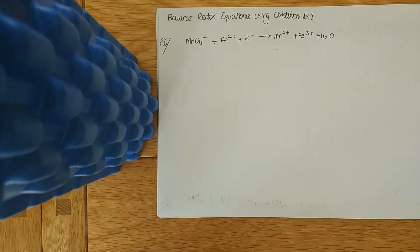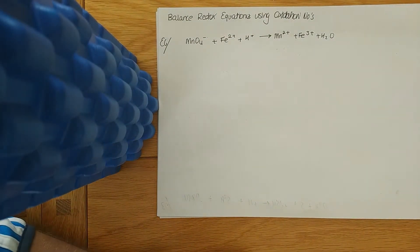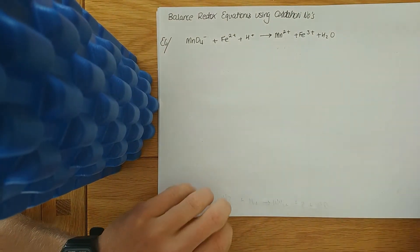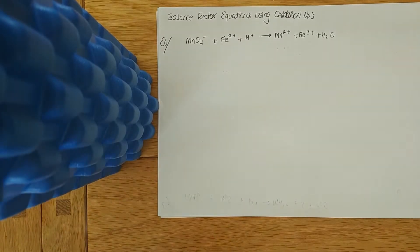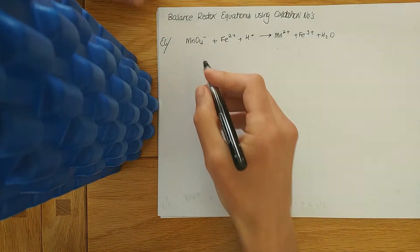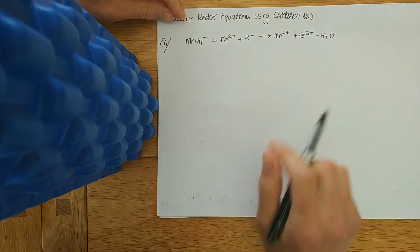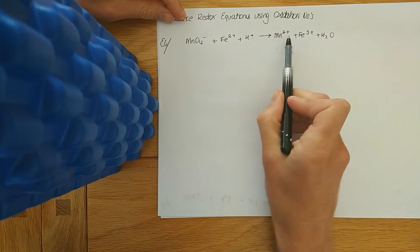The final thing on oxidation numbers is balancing redox reactions. There are different ways to do it, but I personally like using a method involving simultaneous equations. We'll identify what's oxidised, what's reduced, what's the oxidising agent, what's the reducing agent, and then put big numbers in front of the relevant species.